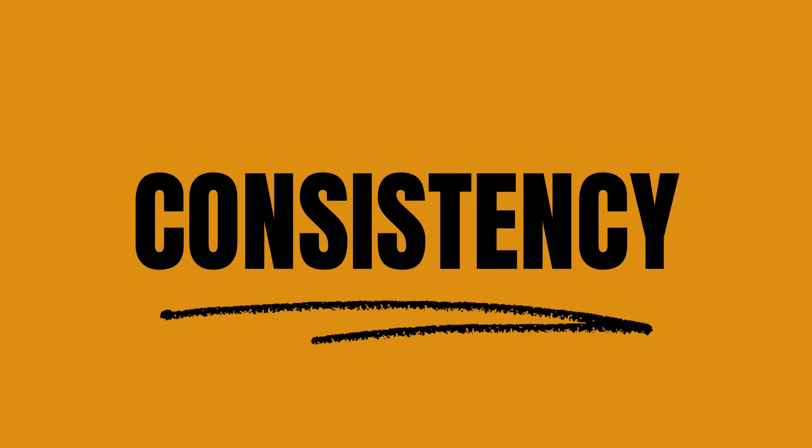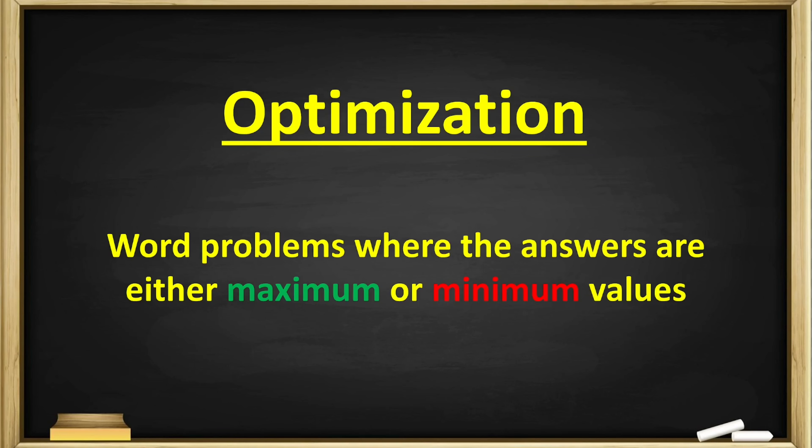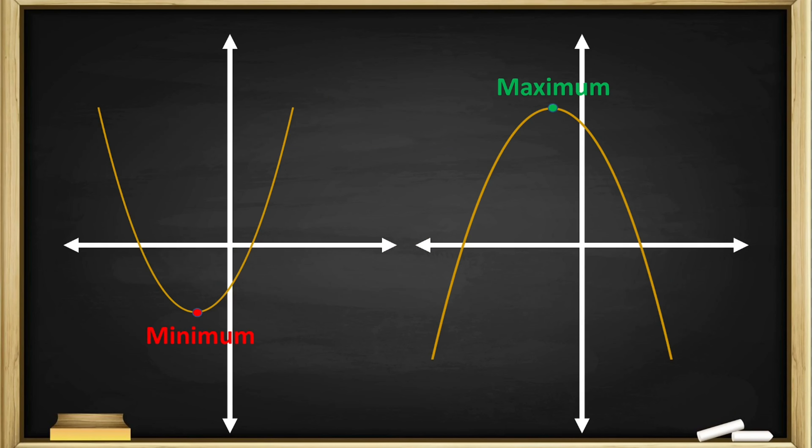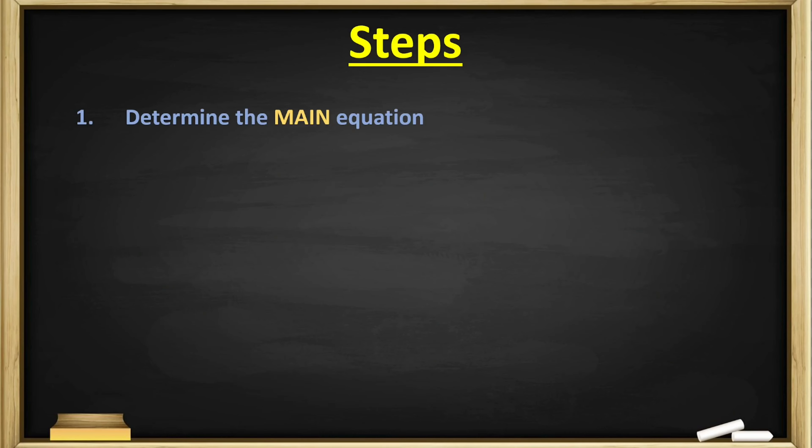Optimization questions are basically word problems where your answers are always going to be maximum or minimum values. That might sound weird because you're thinking, how do maximum or minimum values tie in with word problems? Well, let's take a look at it graphically. All minimum and maximum values share one thing in common: their slopes are zero, which means in calculus talk, their first derivative is zero. So if you can find the coordinates of your minimum or maximum values, that will give you the answer to your optimization questions.